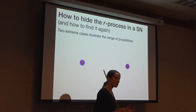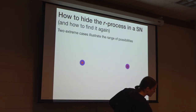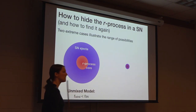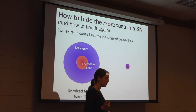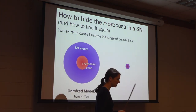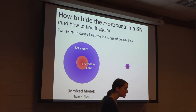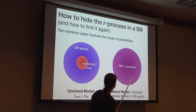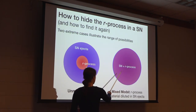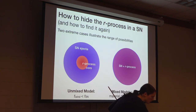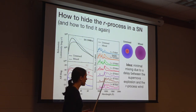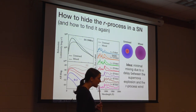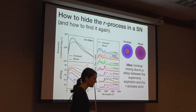One idea for hiding the R-process is to bury it inside the bulk of the supernova ejecta—physically motivated if you assume the disk outflow containing R-process-rich material is launched at some time delay after the supernova. We call this the unmixed model. Because we want to look at the full range of possibilities, we also considered a maximally mixed model, where the R-process material is fully mixed into the supernova ejecta. I used radiation transport calculations to understand what the supernova light curves and spectra would look like in each of these scenarios.